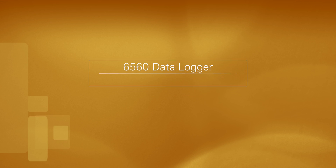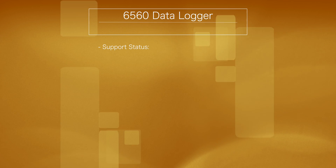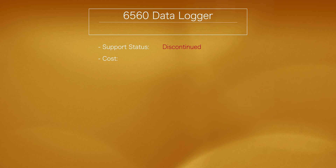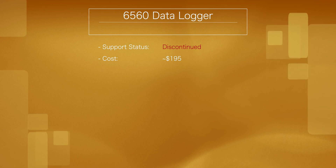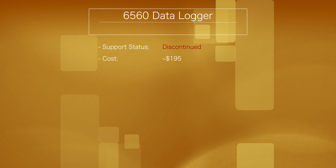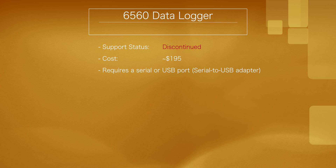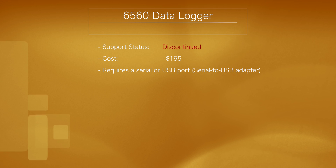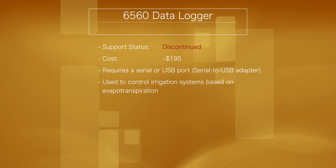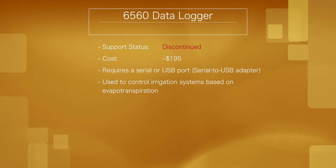The 6560 data logger is for use with irrigation systems, allowing you to control the most common irrigation systems — turning them on and off based on certain weather criteria. The 6560 has been discontinued, but you can still find it online for about $195. Like some of the other loggers, it requires a serial port or a USB-to-serial adapter. The 6560 controls irrigation systems based on evapotranspiration.